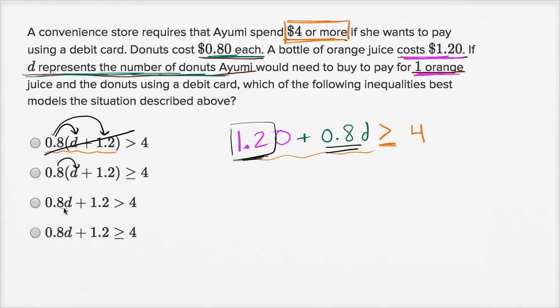Let's see, 0.8D plus 1.2 is greater than four. We're close, but remember, we want greater than or equal to four.